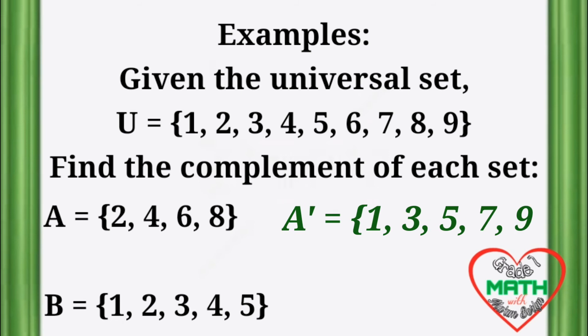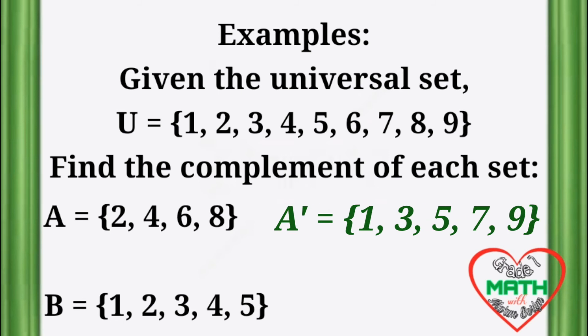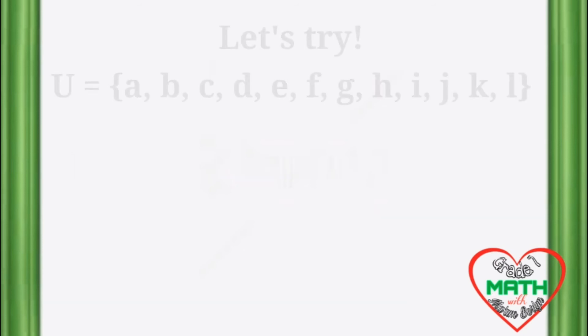A complement is equal to {1, 3, 5, 7, 9}. These are the elements that can be found in the universal set U but not in set A. B complement is equal to {6, 7, 8, 9}. These are the elements that can be found in the universal set U but not in set B.